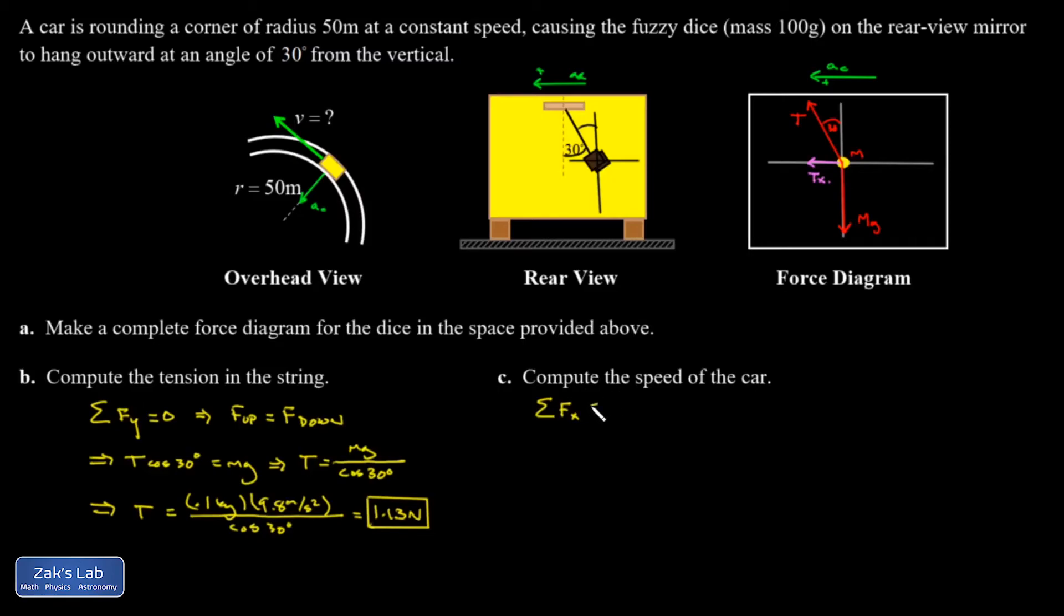So I have the sum of all the forces in the x direction equals m times ac. I then plug in my x forces. That's just Tx, which is given by T sine 30. And then my centripetal acceleration is related to the speed by v squared over r.